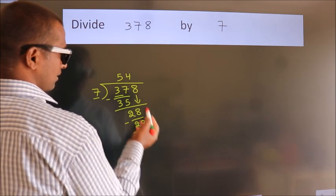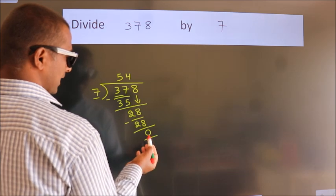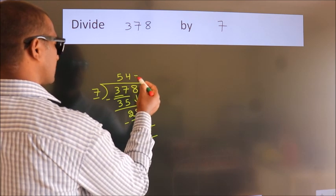After this, no more numbers to bring down. We got remainder 0. So this is our quotient.